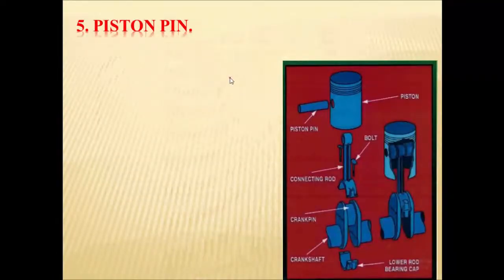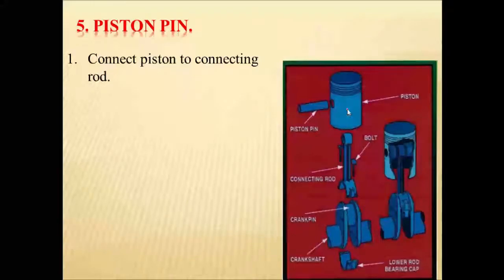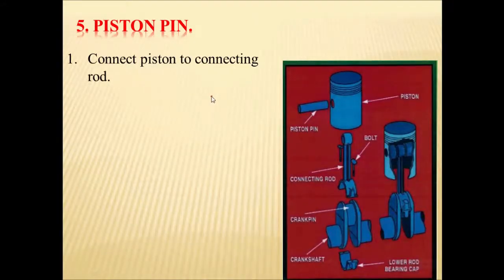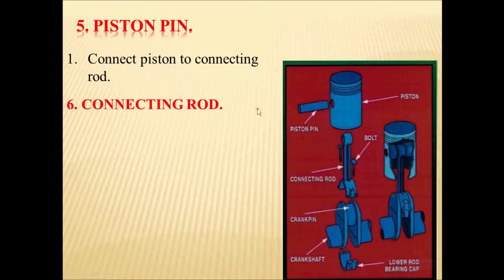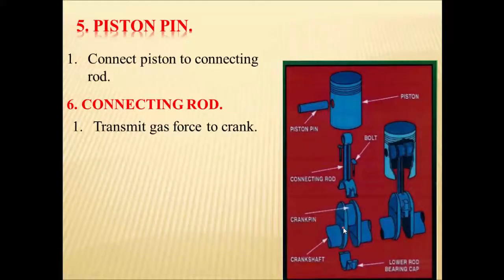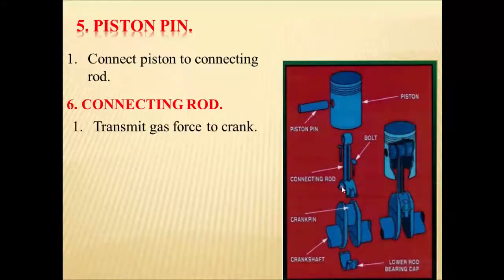Fifth is the piston pin. There is a cylindrical pin whose function is to connect the connecting rod to the piston. It is also called the gudgeon pin. Next is the connecting rod. The function of the connecting rod is to convert the reciprocating motion of the piston to the rotary motion of the crankshaft, transmitting the gas force from the piston to the crankshaft. The small end of the connecting rod is connected to the piston through the piston pin, and the bigger end is connected to the crank through the crank pin.